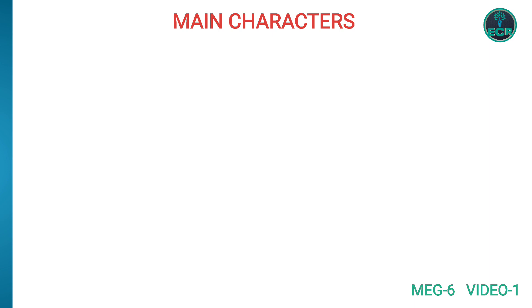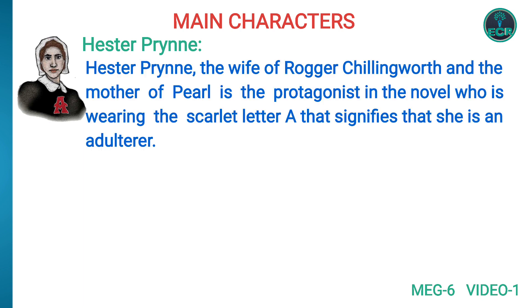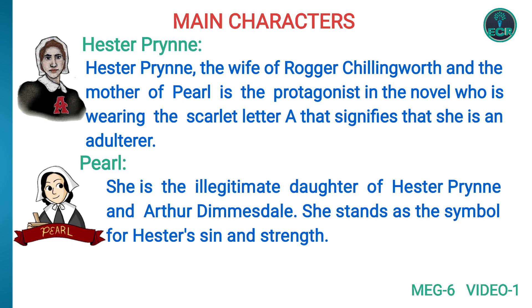Our first character is Hester Prynne. Hester Prynne, the wife of Roger Chillingworth and the mother of Pearl, is the protagonist in the novel who is wearing the Scarlet Letter A, which signifies that she is an adulterer. Then we have Pearl, the illegitimate daughter of Hester Prynne and Arthur Dimmesdale. She stands as a symbol for Hester's sin and struggle.